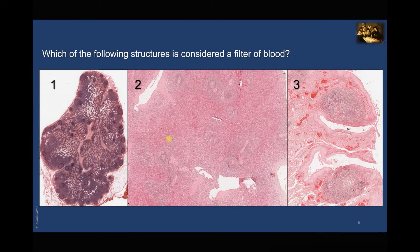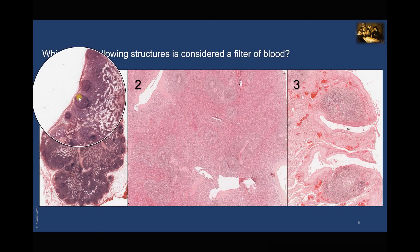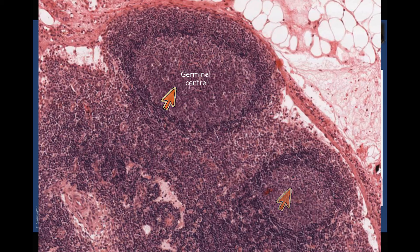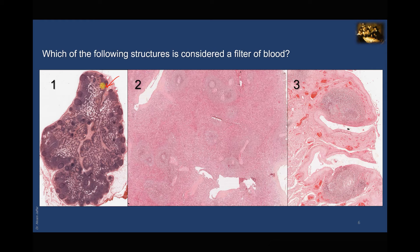Which of the following structures is considered a filter for blood? Slide one is a lymph node — you can see the fibrous capsule and surrounding fatty tissue, with a cortex containing lymphatic nodules (some showing a germinal center, indicating secondary active nodules) and a medulla with medullary cords and sinuses. It is actually the lymph node that is a filter for lymph, not for blood. It receives multiple afferent lymphatic vessels and lymphocytes in the lymph node are exposed to antigens in lymph as it flows through from afferent to efferent lymphatic vessels.